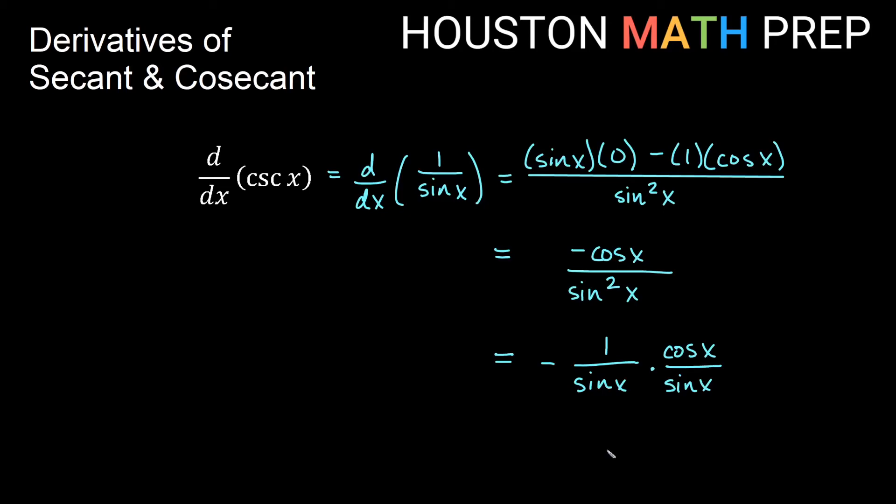So now we have that. And we can go ahead and say what this is. We have negative. What is the reciprocal of sine? 1 over sine x. We know that from the beginning, that's cosecant of x. And then cosine x over sine x, we should know that that is cotangent x, the reciprocal of tangent. Okay, so we get that the derivative with respect to x of cosecant x is actually negative cosecant x cotangent x.